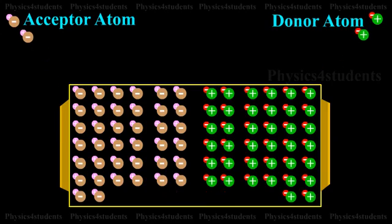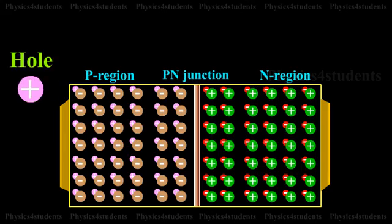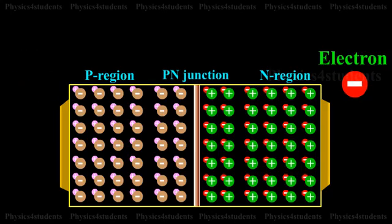As shown in the animation, the P region has a high concentration of holes and the N region contains a large number of electrons.